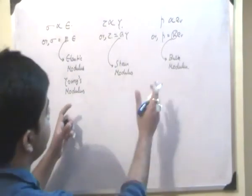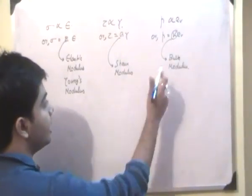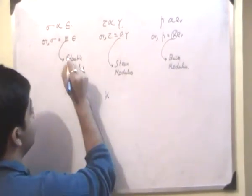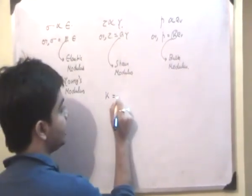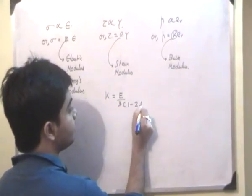Now there are some relations between these different modulus of elasticity. The bulk modulus and Young's modulus has a relation of K is equal to E by 3 times 1 minus 2 mu.